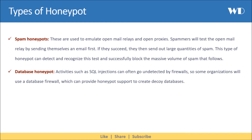Next is spam honeypots. These are used to emulate open mail relays and open proxies. Spammers will test the open mail relay by sending themselves an email first. If they succeed, they then send out large quantities of spam. This type of honeypot can detect and recognize this test, and successfully block the massive volume of spam that follows. Next we have database honeypots. Activities such as SQL injections can often go undetected by firewalls, so some organizations will use a database firewall, which can provide honeypot support to create decoy databases.